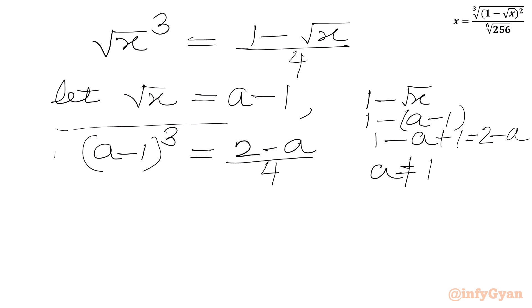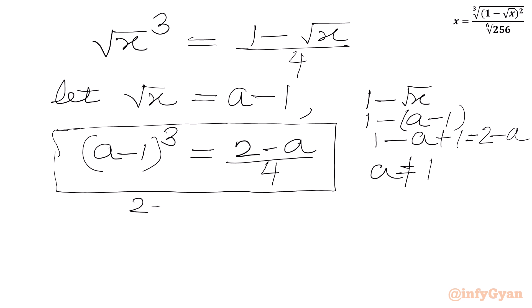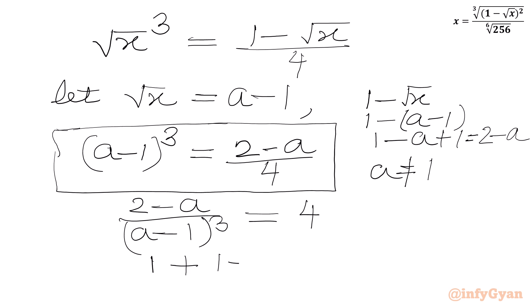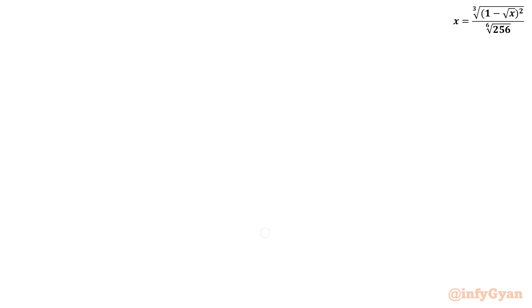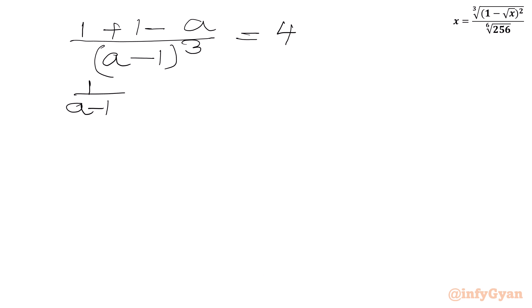Note that a cannot equal 1 for our cubic equation. Cross-multiplying, we get (2 minus a) over (a minus 1) cubed equal to 4. Now I will split the numerator: write 2 minus a as 1 plus (1 minus a), giving (1 plus (1 minus a)) over (a minus 1) cubed equal to 4.